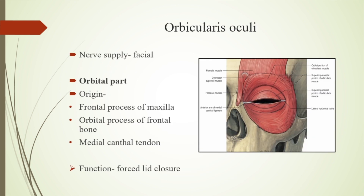Next, coming to the muscles — the orbicularis, which is divided into orbital and palpebral parts. The main supply for the orbicularis is the facial nerve. The orbital part originates from the frontal process of maxilla, the orbital process of frontal bone, and the medial canthal tendon. The orbital part helps in forceful lid closure, covering around the rim without stopping, and then inserting just below its origin.